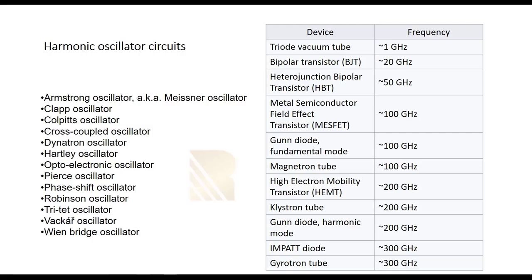This table is showing some of harmonic oscillator circuits, like Armstrong, Colpitts as we mentioned, cross-coupled oscillator, and there are lots of circuits here. Wien-bridge oscillator is also popular among these.